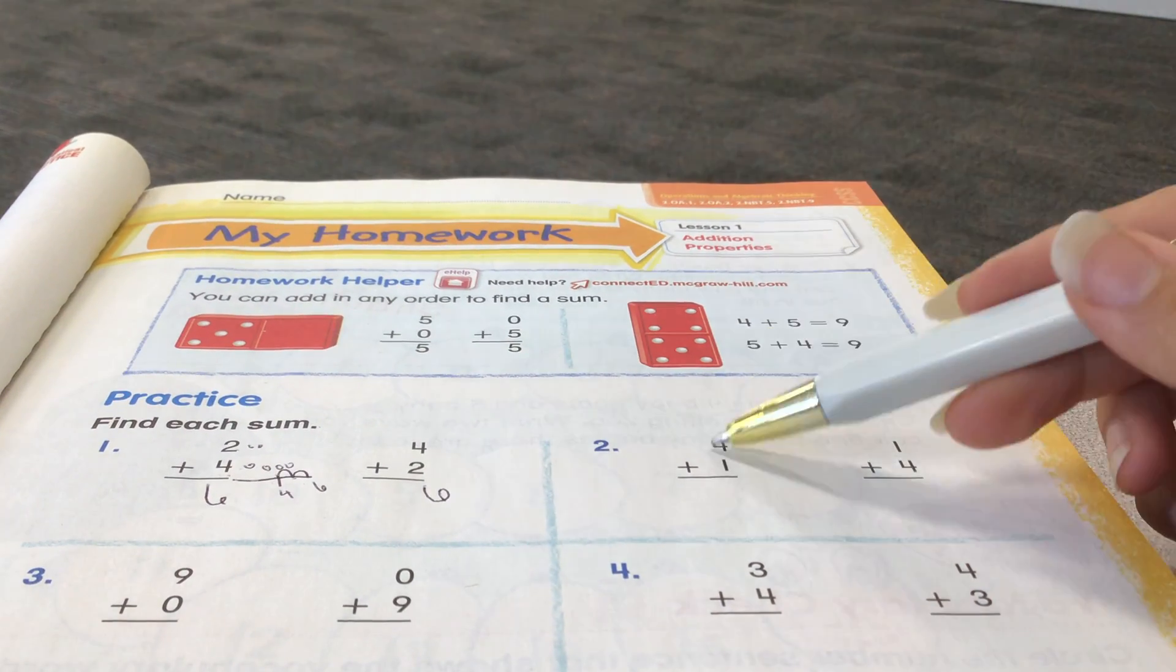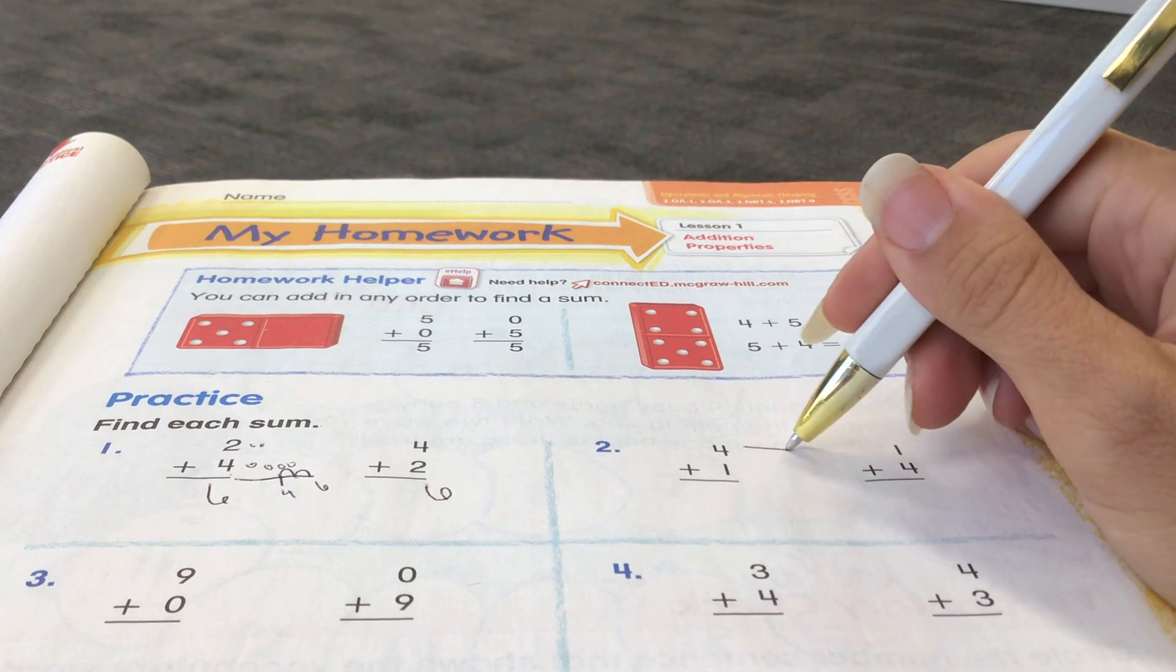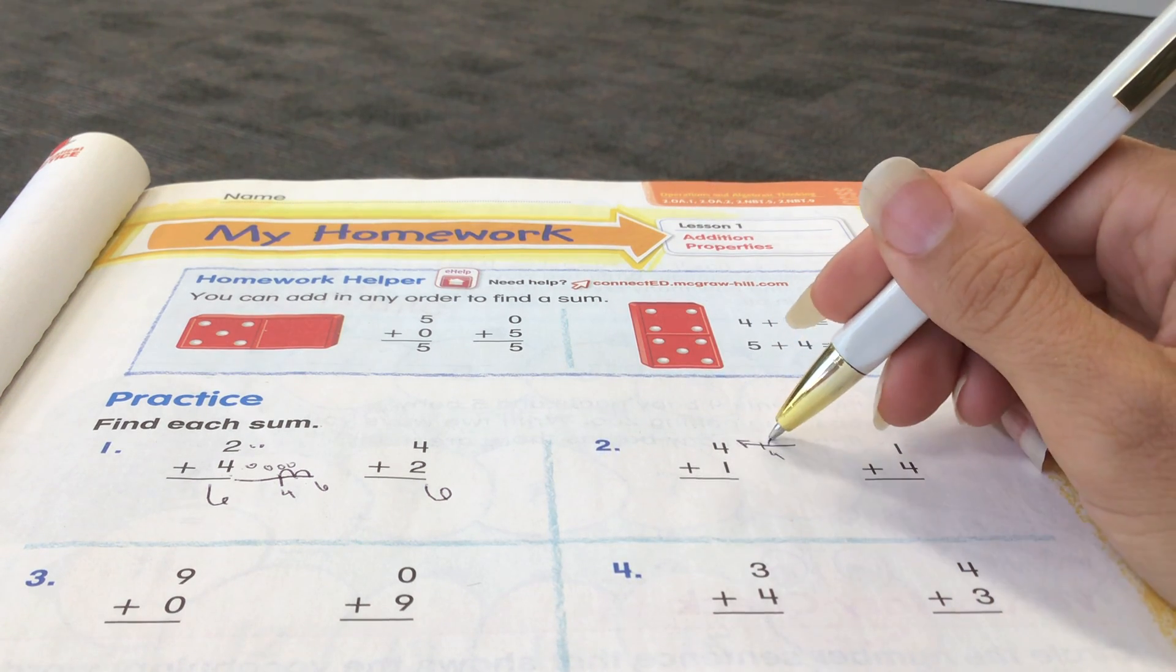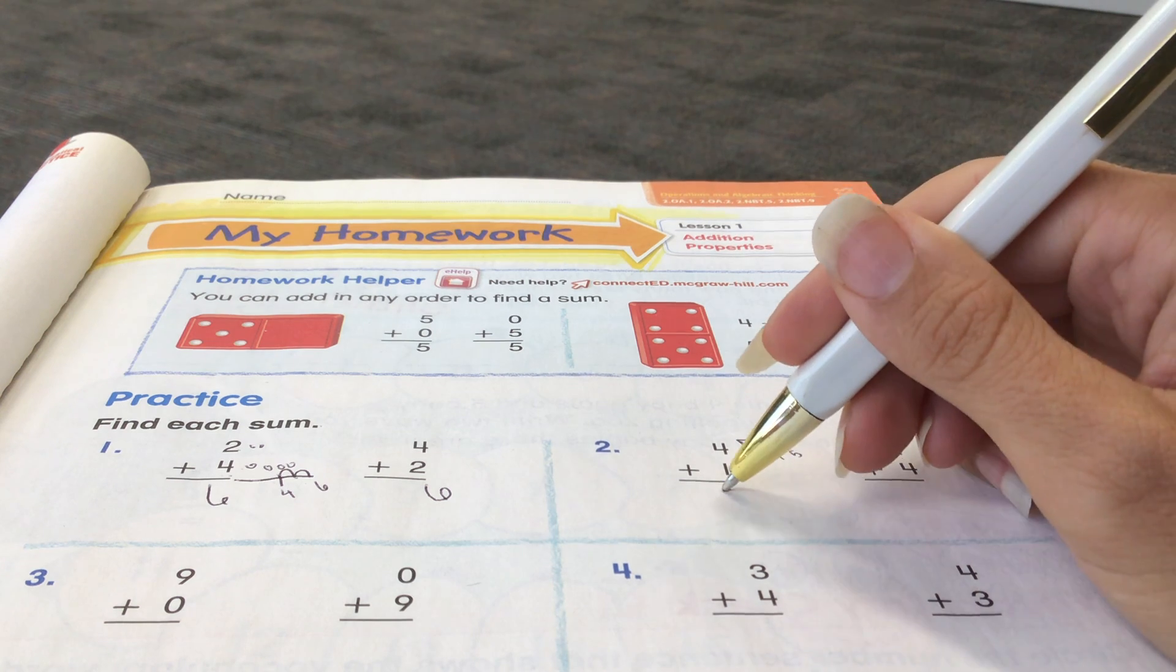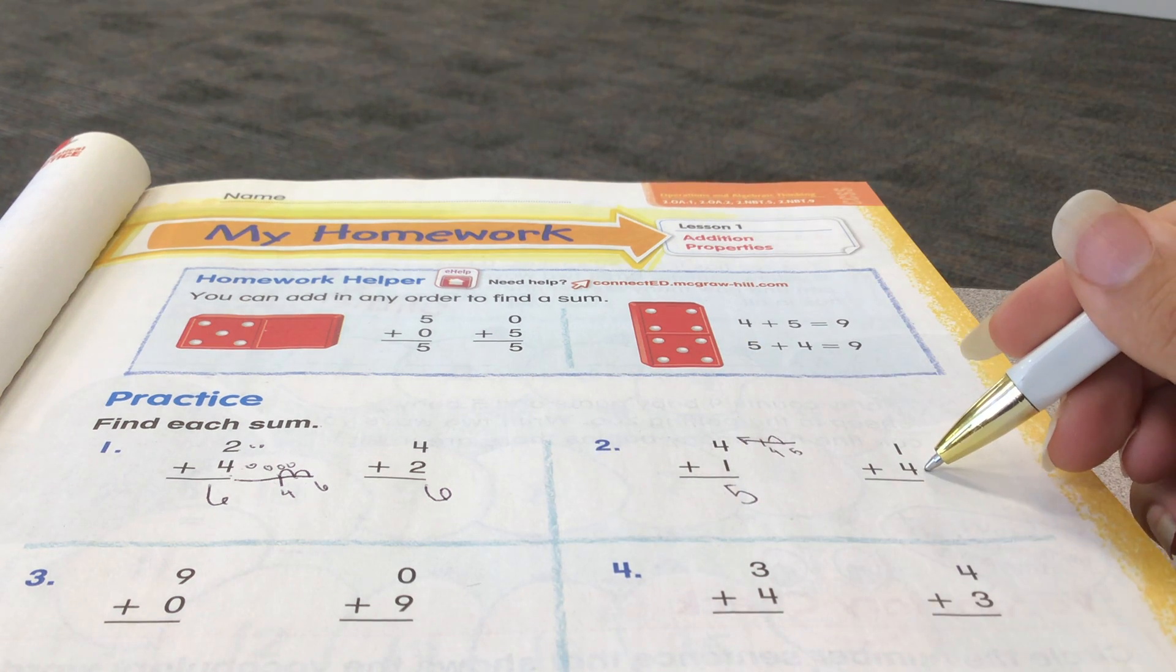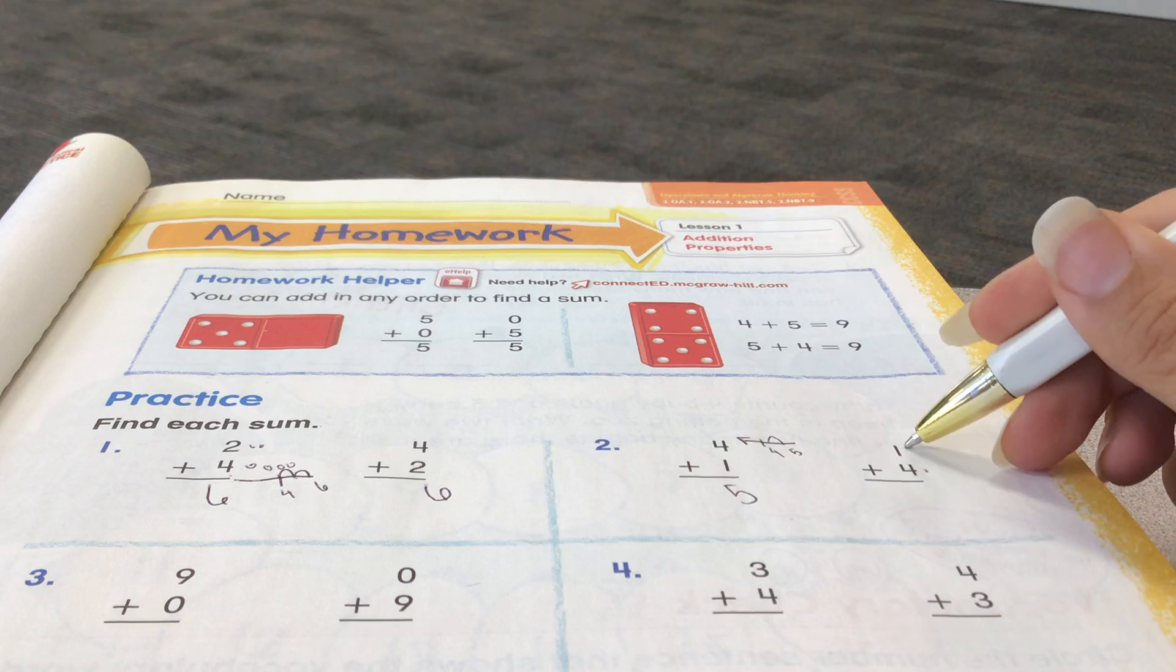Number 2, 4 plus 1. We can draw our number line. 4. And then one more would be 5. Here, start with the larger addend, 4. Add one more, 5.